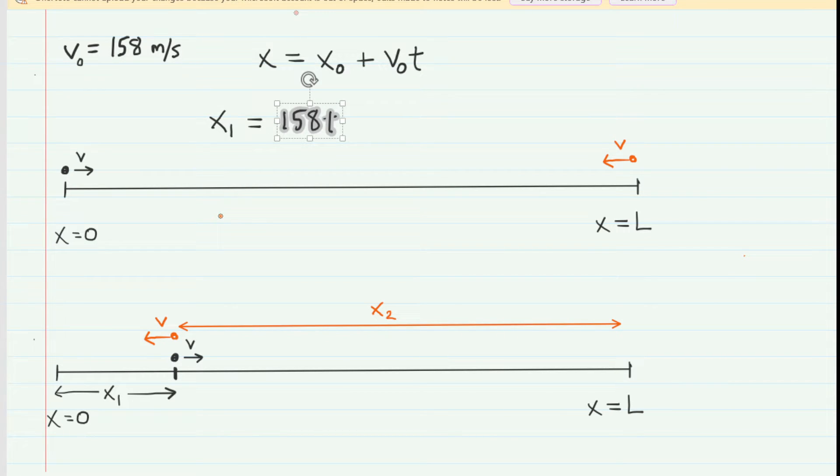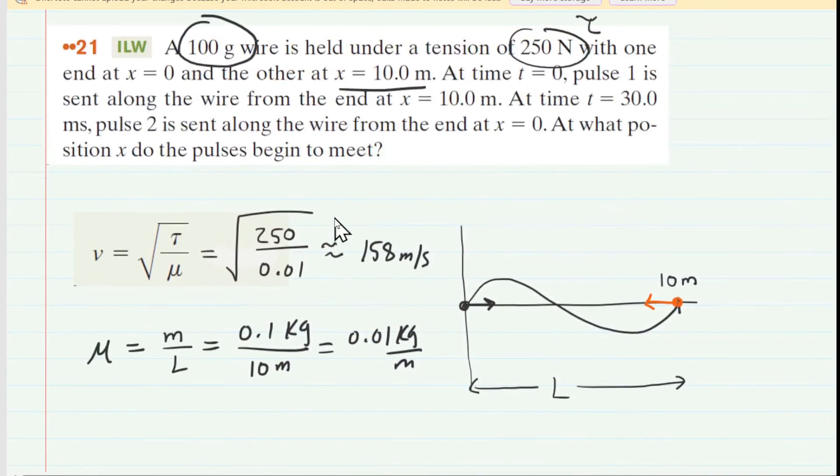Now we'll do something similar for pulse 2. For pulse 2, the initial x-coordinate is actually over here at the length of the string, but the length of the string was 10 meters, so you would say 10 meters for that. Now be careful with the velocity of that second pulse. Remember, the velocity of the second pulse is going to be negative because it's traveling to the left. So you want to make sure you say minus 158. And then we also want to be careful regarding the time of travel.